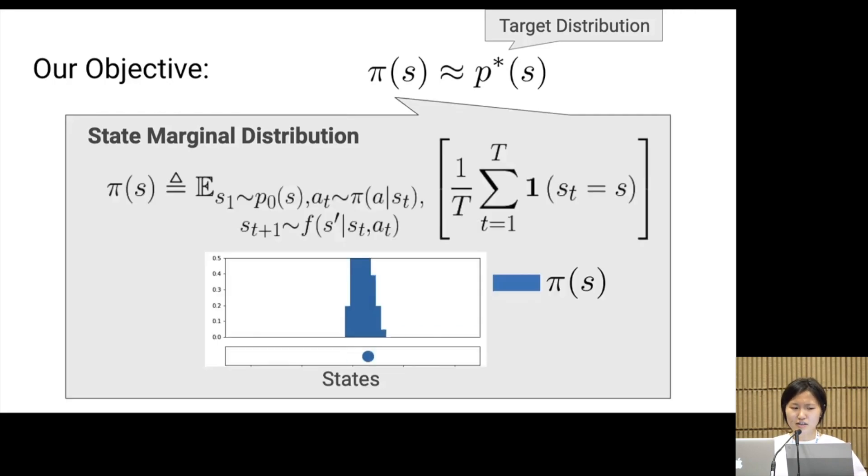So what is the state marginal distribution π(s)? We define it as the expected number of times the policy visits a state. Let's assume fixed horizon episodes, but this assumption is easy to relax. To sample a state from π(s), we roll out a trajectory using the policy, then sample a random state from that trajectory. To avoid confusion, the state marginal distribution is integrating over time steps, not over the state dimensions.